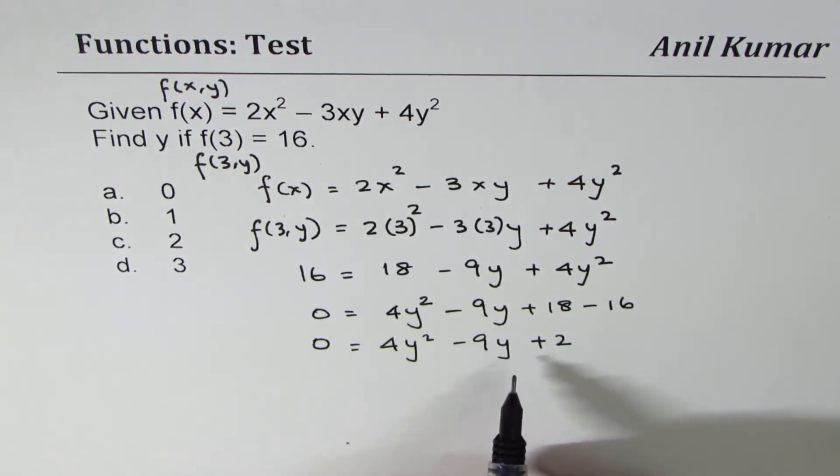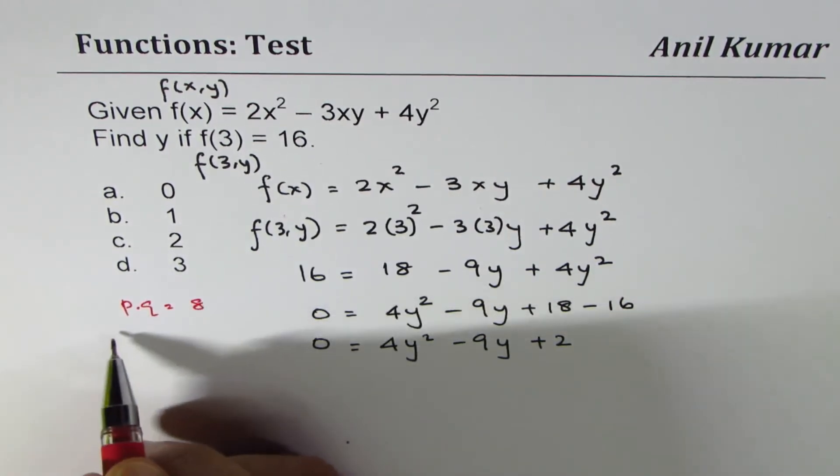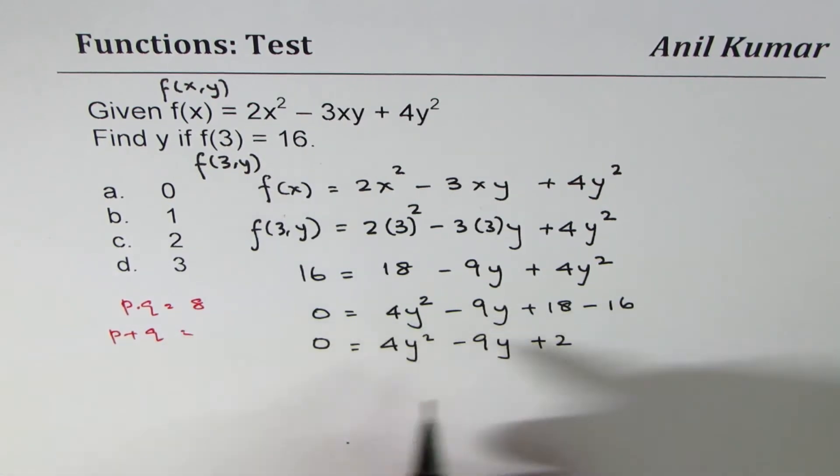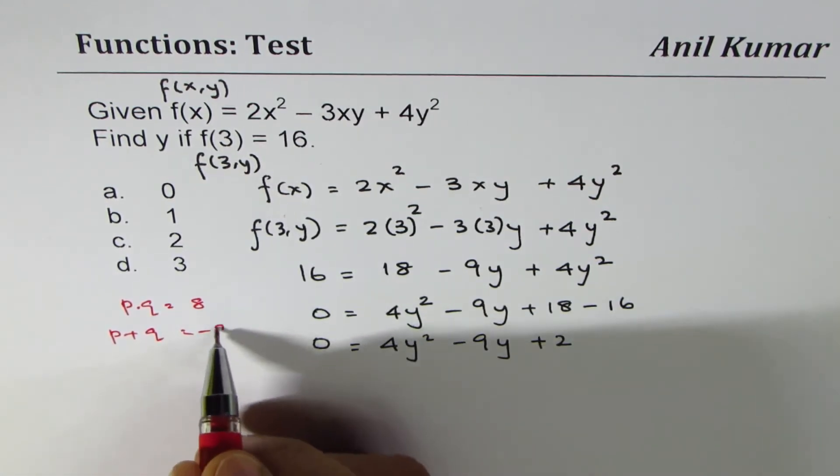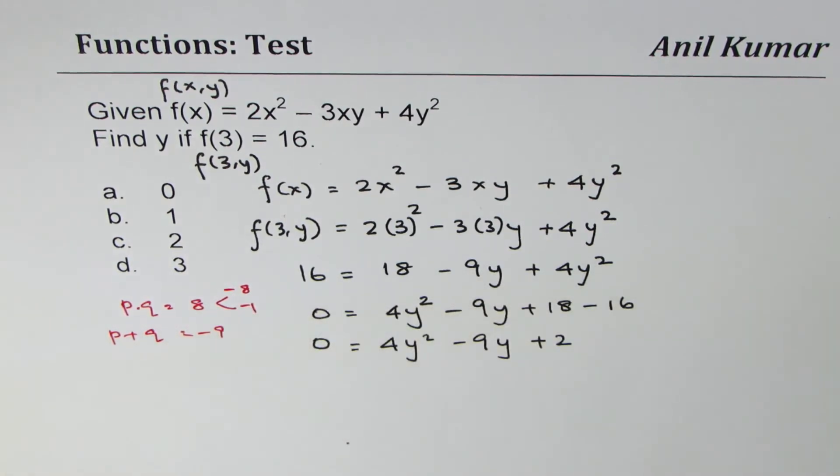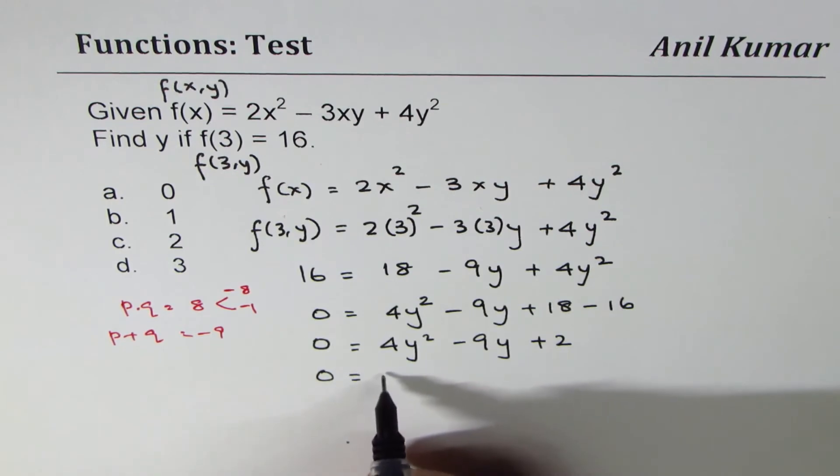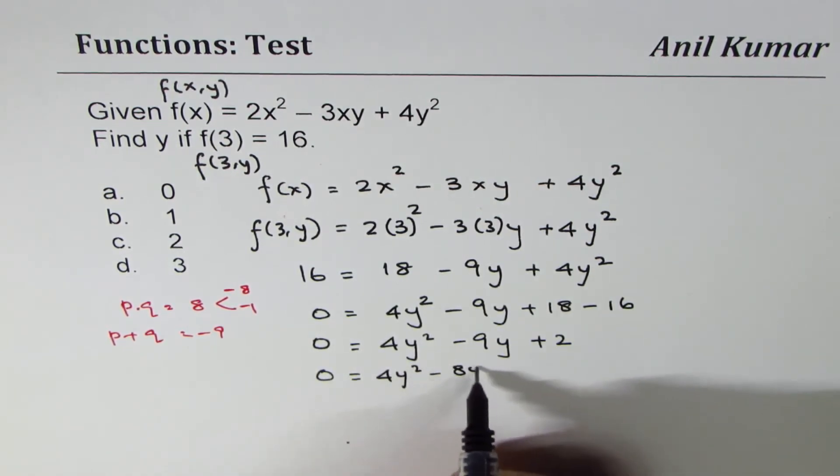Now you can factor this equation. We're looking for a product of 8 (4 times 2), so we're looking for two numbers whose product is 8 and whose sum is -9. The two numbers could be -8 and -1, correct?